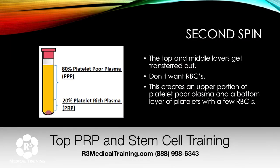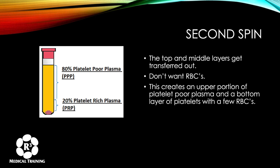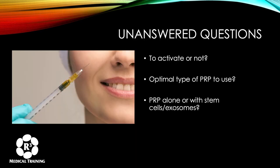For a second spin, you take the top plasma layer and the buffy coat and transfer that out, discarding the red blood cell layer. Most kits have you aspirate until you get a tinge of pink, then stop. The second spin results in a large top layer of platelet-poor plasma (PPP) and the platelets spin to the bottom — that's your platelet-rich plasma.